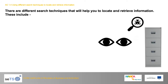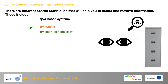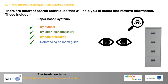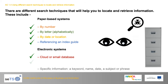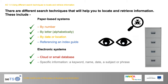There are different search techniques to help you locate and retrieve information. For paper-based systems: searching by number, by letter alphabetically, by date, or by location, using a referencing and index guide. For electronic systems: the use of cloud or email databases, and searching by specific information such as a keyword, name, date, subject, or phrase. Or a Boolean search, which includes the words 'and', 'or', or 'not'.